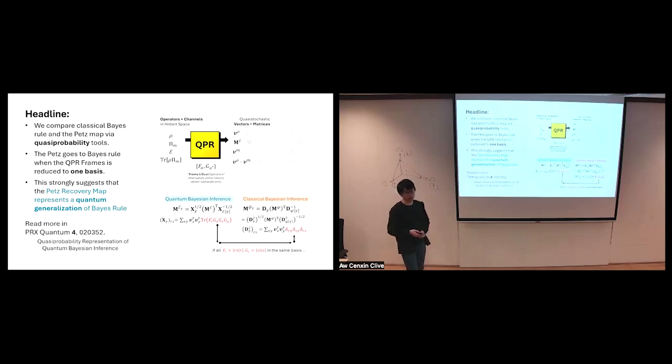Classical Bayes' rule and the PETS map can be compared using QPR, and the QPR of PETS collapses to classical Bayes' rule when reduced to one basis. This strongly suggests that the PETS recovery map is a quantum generalization of classical Bayes' rule. For more on this, you can read the PRX Quantum paper that is already out.